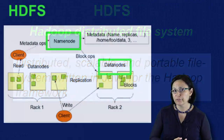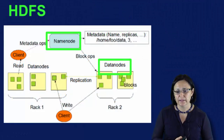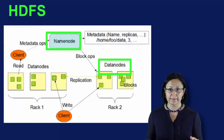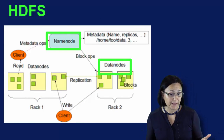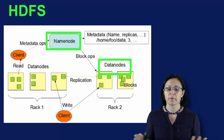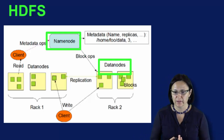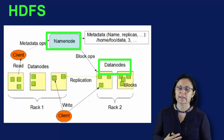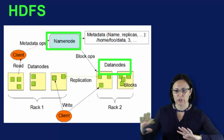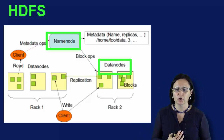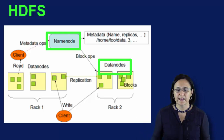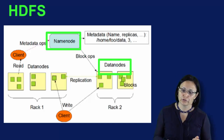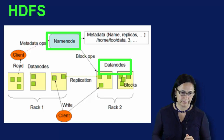HDFS stores large files, typically in ranges of gigabytes to terabytes, and now even petabytes, across multiple machines. You can achieve reliability by replicating across multiple hosts, and therefore it does not require any RAID storage on hosts.